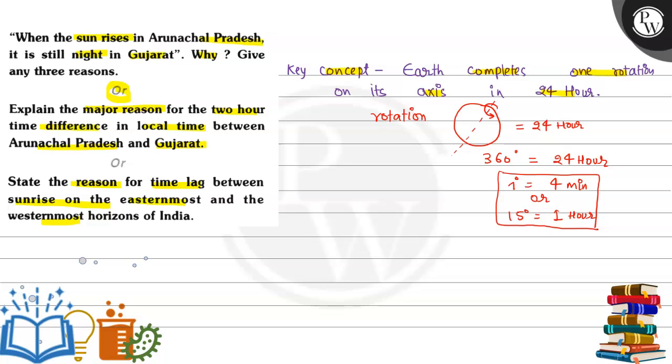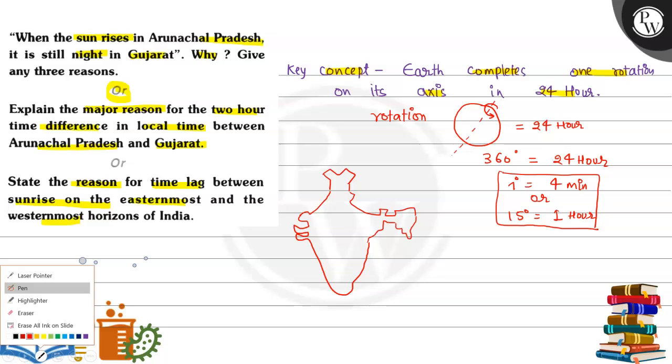Now coming to the main part of the question, why there is a time difference between Arunachal Pradesh and Gujarat. Just to have a clear understanding, let's draw a map of India quickly. This is our map of India. This is easternmost of India.